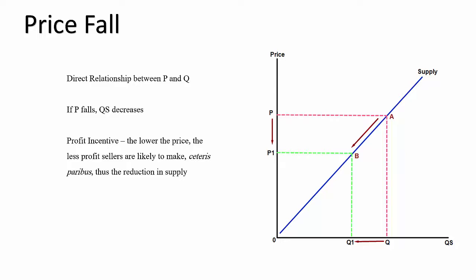The profit incentive is the reason why a falling price leads to a falling quantity supplied. Obviously, if all other things are equal, ceteris paribus, the lower the price of the product the less profit suppliers will make. As with demand analysis, we move along the supply curve if there's a change in price only and no other external variable has changed. The movement from A to B represents what we call a contraction of supply, which means it gets less or smaller.